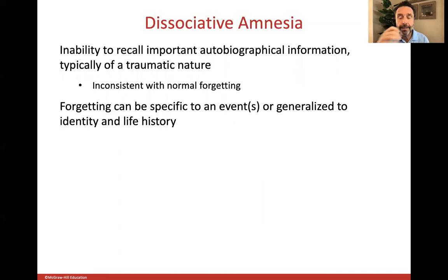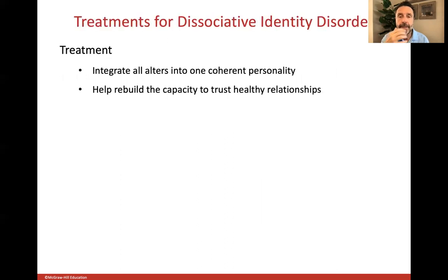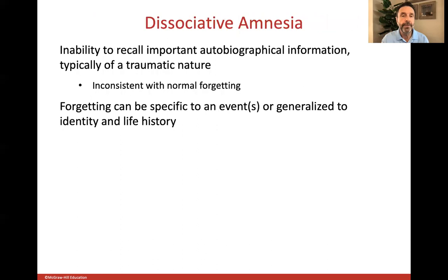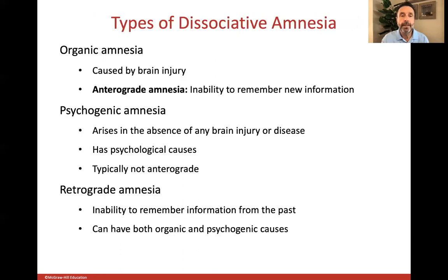The treatment for dissociative identity disorder is usually trying to integrate all of the different alters or different personalities into one or two personalities that can be easily handled by the person. Again, a very specialized treatment is needed — you need someone who is specialized and has a lot of experience working with this in order to have the best results.